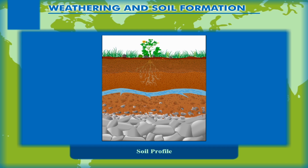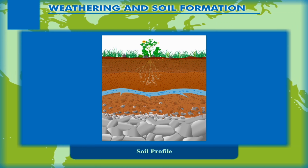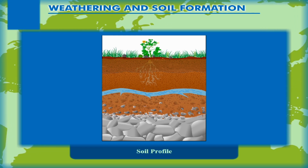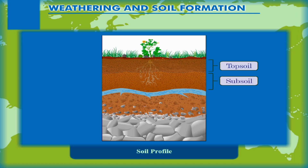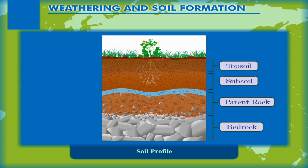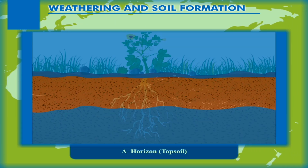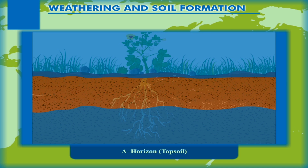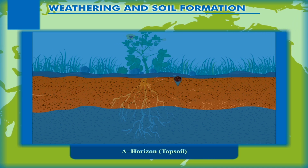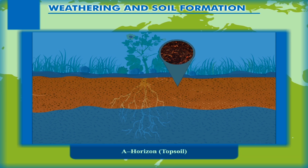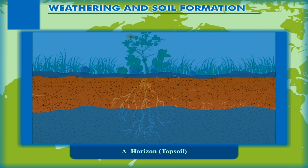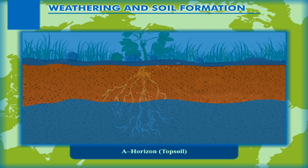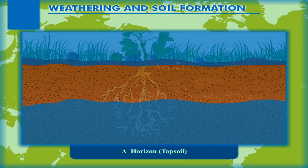Soil Profile: The vertical section of the soil showing its different layers is known as soil profile. There are different horizons of soil such as topsoil, subsoil, parent rock, and bedrock. A-horizon or Topsoil: The uppermost layer of the earth is known as A-horizon or topsoil. The major content of this section is humus. This makes it generally blackish-brown in colour. The topsoil is soft and porous. It has a good water retaining capacity and is a habitat of many tiny organisms.